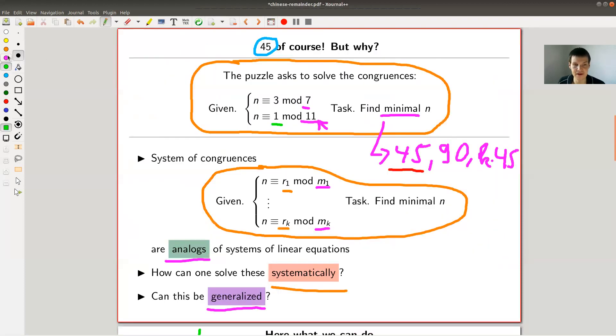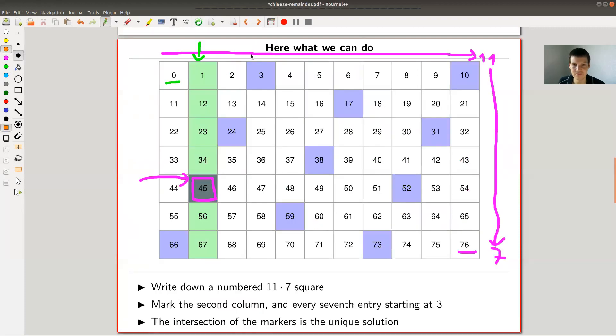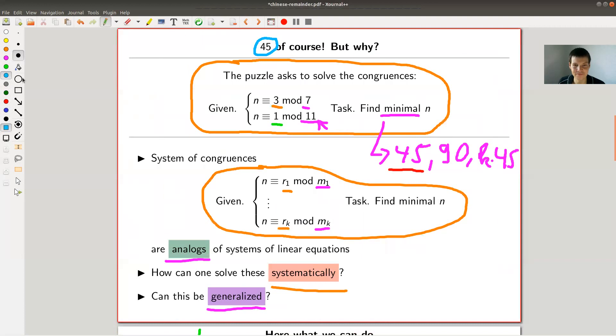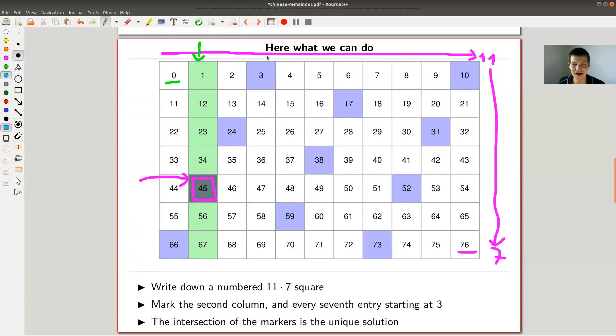I look at my second remainder, or let's say the orange one, three. Well, let's say the blue one, three. And I start at three and then I count seven, one, two, three, four, five, six, seven marks the next one. Mark the next one, and so on. And the unique intersection of green and blue will be the answer. So let me show this to you in a linked Mathematica description live.